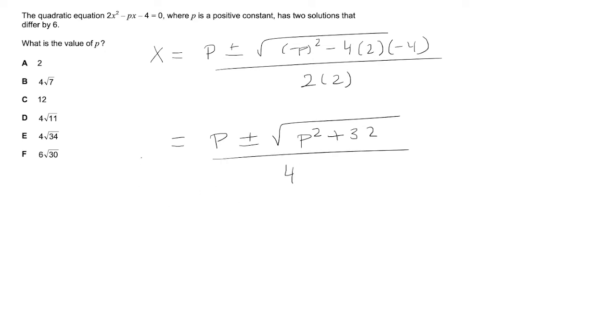So one of the roots is going to be p + √(p² + 32) all over 4, and the other root will be p - √(p² + 32) all over 4.